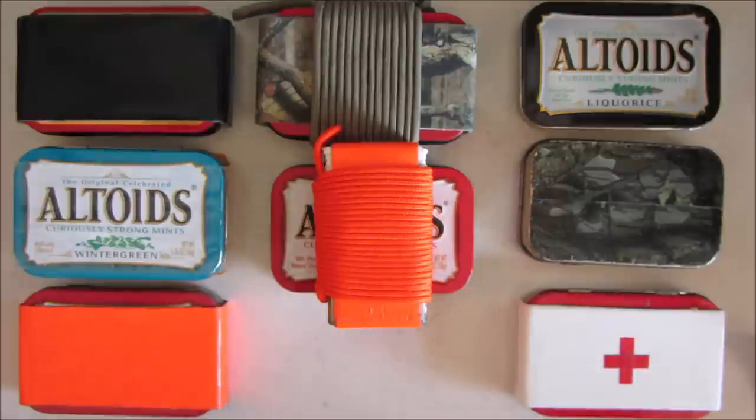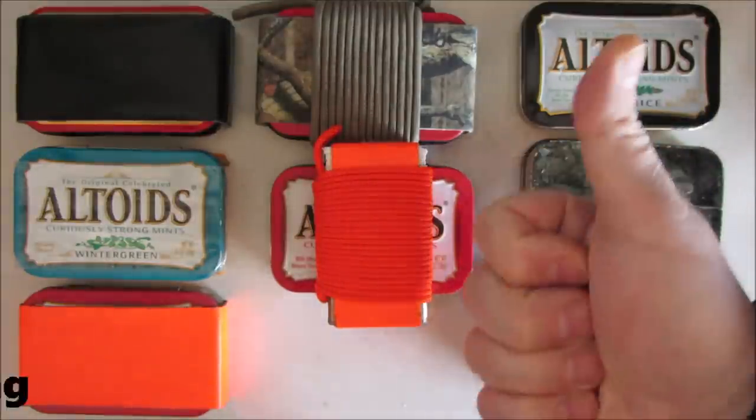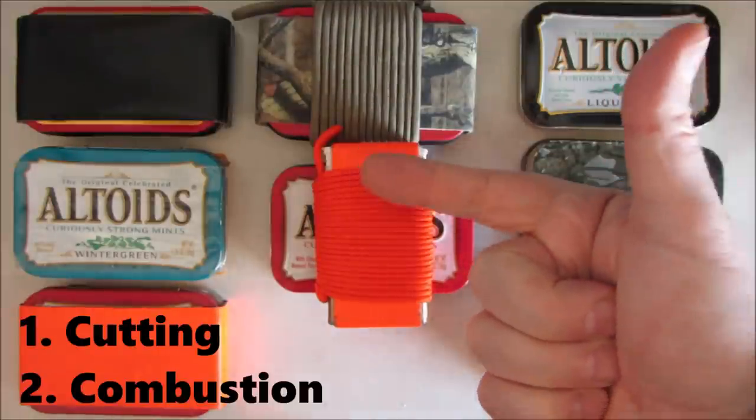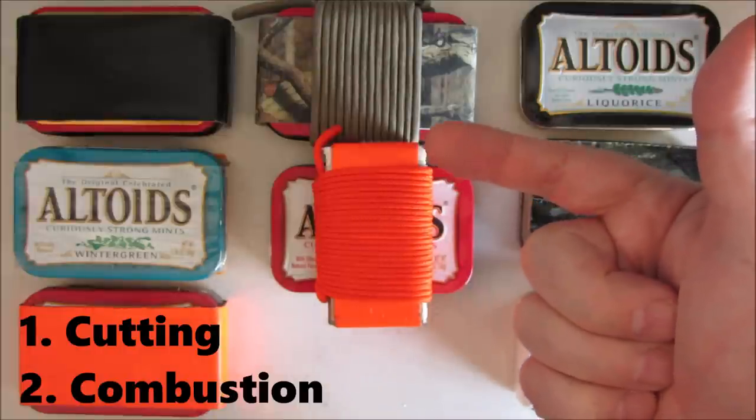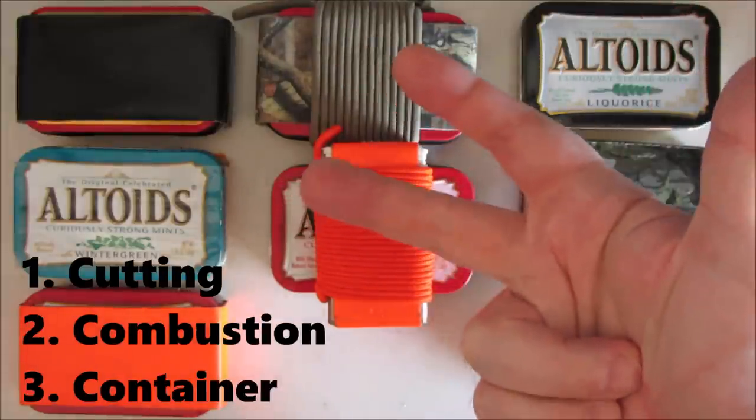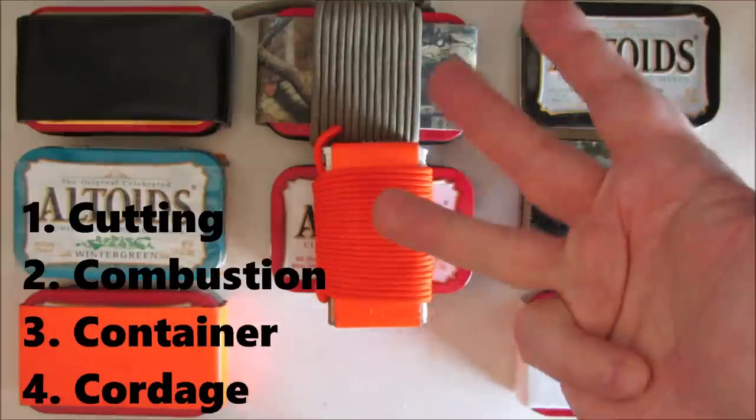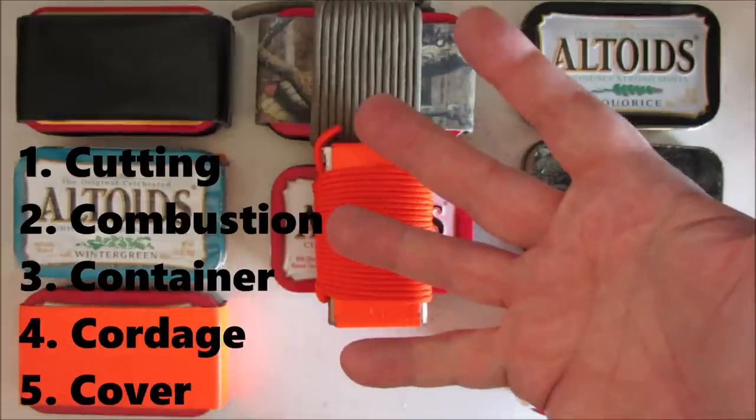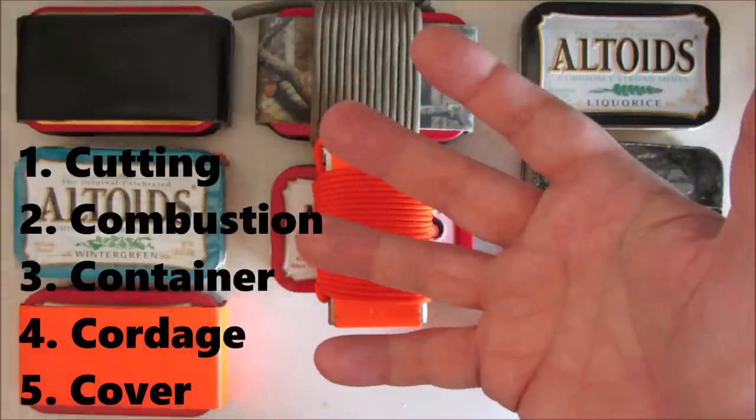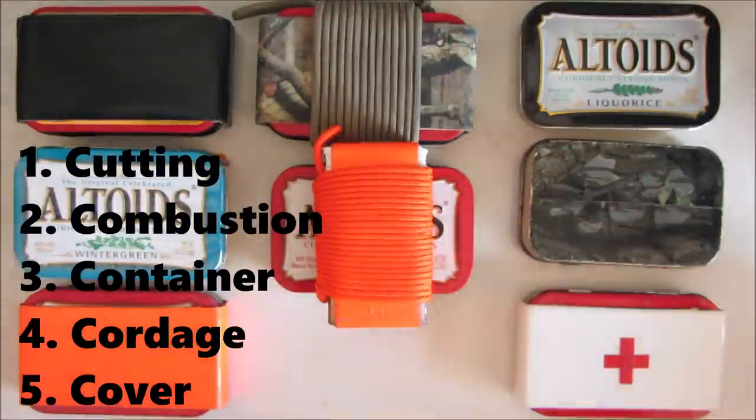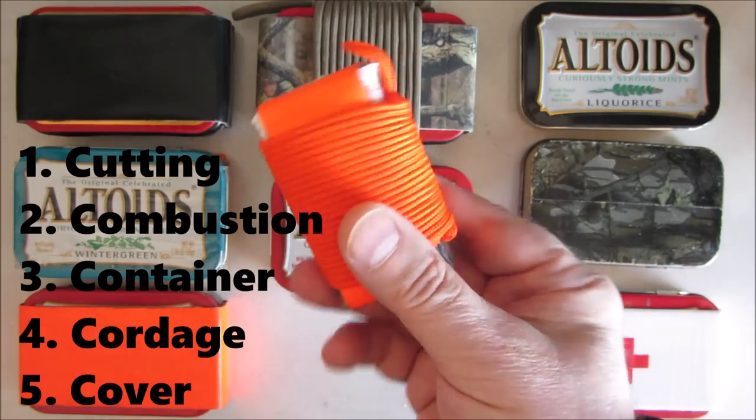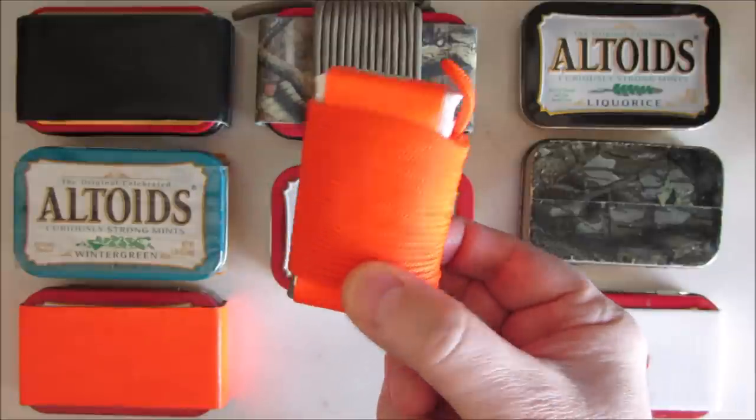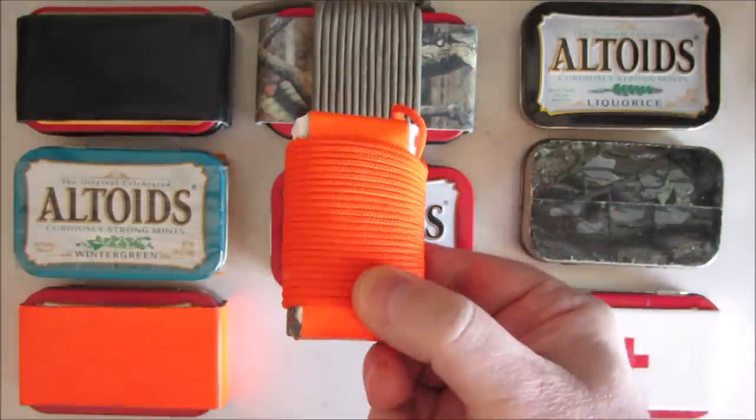The 5Cs that you want in a survival kit are, if I can remember them: cutting, basically means you want to have a knife. Combustion, fancy word for you want to be able to start a fire. Container, you want to be able to carry water and ideally sterilize it. Cordage, paracord for instance would be an example. And finally, cover, something like a wool blanket to keep you warm, keep you protected from the elements. So how on earth could I fit 5C into something that I can fit in my shirt pocket?